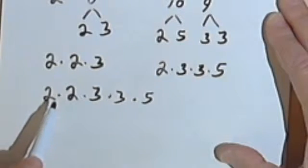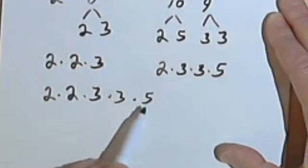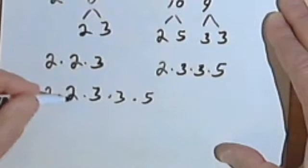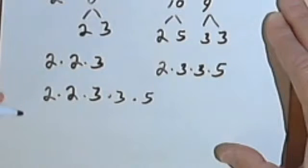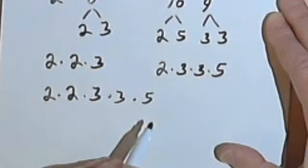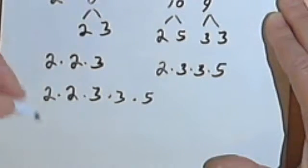So this number is going to be, when I multiply all this together, that will give me my least common multiple. Now, I could multiply all these together, but actually I don't even have to. Let's go back to the original problem.